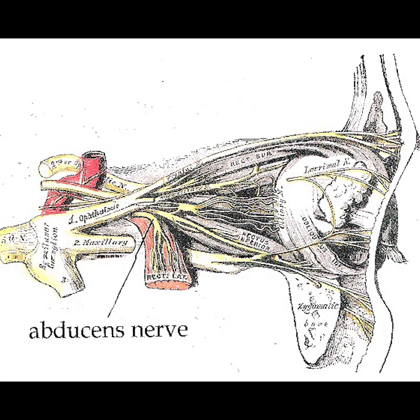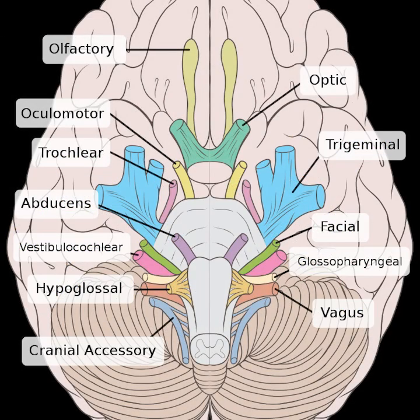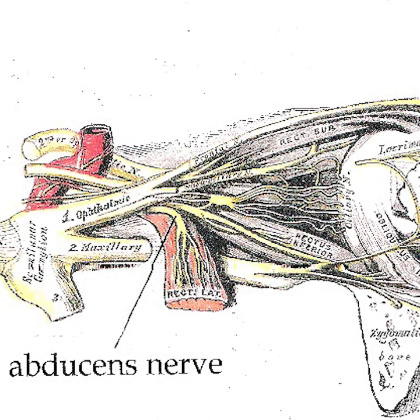The Anatomy of the Abducens Nerve. The Abducens Nerve, or Abducent Nerve, also known as the 6th Cranial Nerve, Cranial Nerve 6, or simply CN6, is a cranial nerve in humans and various other animals that controls the movement of the lateral rectus muscle, one of the extraocular muscles responsible for outward gaze. It is a somatic efferent nerve.